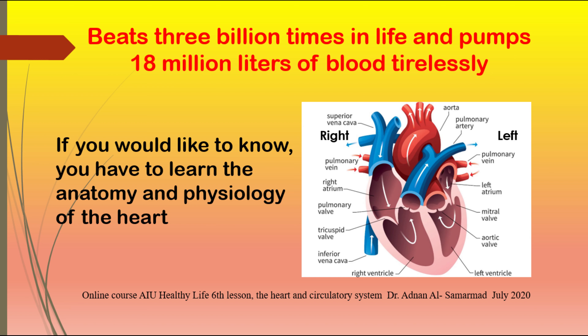The heart beats three billion times in life and tirelessly pumps 18 million liters of blood. To understand this function, you need to learn the basic anatomy of this type of muscle and how it works. The myocardium is divided into two sections, left and right, separated by a tissue called the cardiac septum, and consists of four chambers called atria and ventricles.